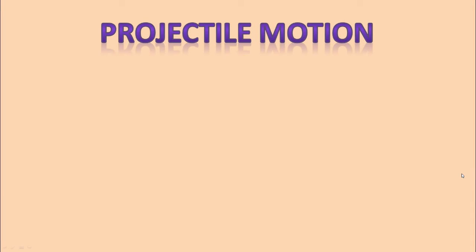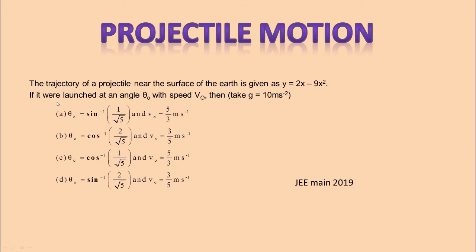Hello, next to solve the problem in the topic projectile motion. This is the problem: the trajectory of a projectile near the surface of the earth is given as y equals 2x minus 9x squared. If it were launched at an angle θ₀ with speed v₀, then take g as 10 meter per second squared.